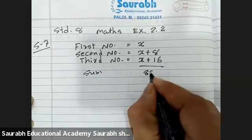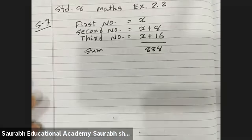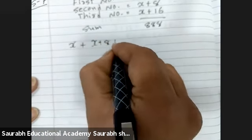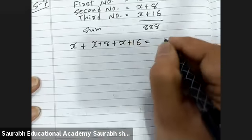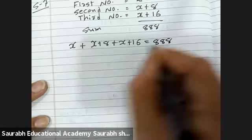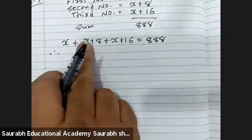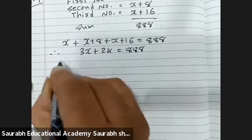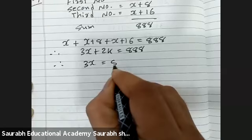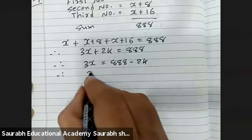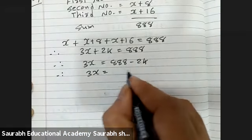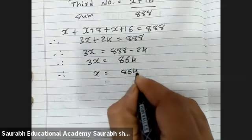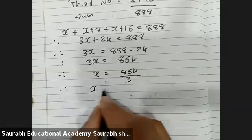Their sum will be 888. So, x plus (x plus 8) plus (x plus 16) equals 888. Therefore, 3x plus 24 equals 888. So 3x equals 888 minus 24, which is 864. Therefore x equals 864 divided by 3.